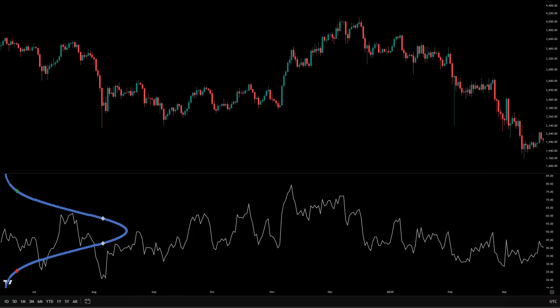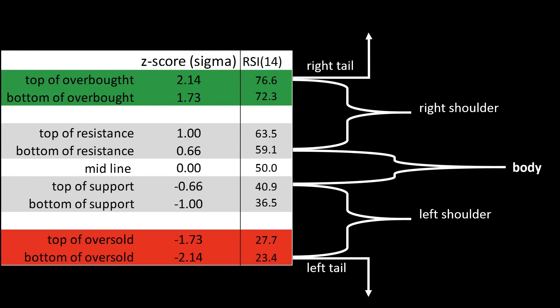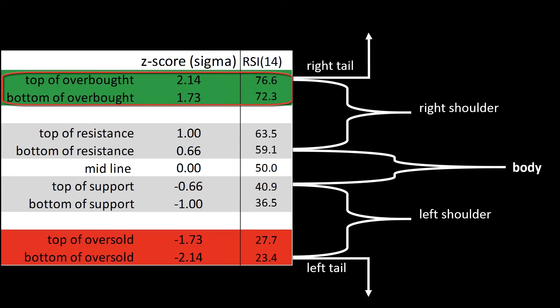We're going to map those landmarks back into RSI values you can actually read on your chart. Let's do that with RSI 14, because that's what most people are used to. When we convert those sigma landmarks back into RSI 14, the resistance zone is roughly 59 to 63.5. The support zone is roughly 36.5 to 41. The overextension on the top side — what people usually call overbought — is the 72.3 to 76.6 area. The overextension on the bottom side — what people call oversold — is the 23.4 to 27.7 area. Those are not hand-drawn numbers; they are statistically calibrated from the sigma structure, and they align with thresholds you see in a lot of trading books.